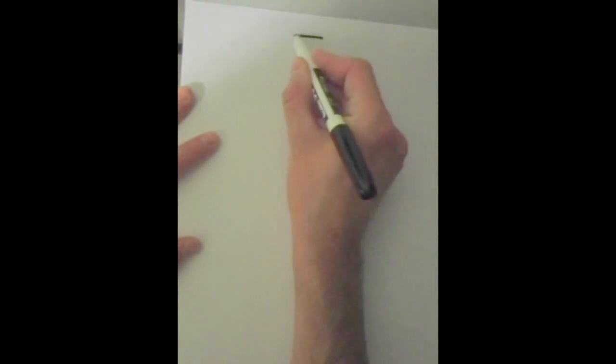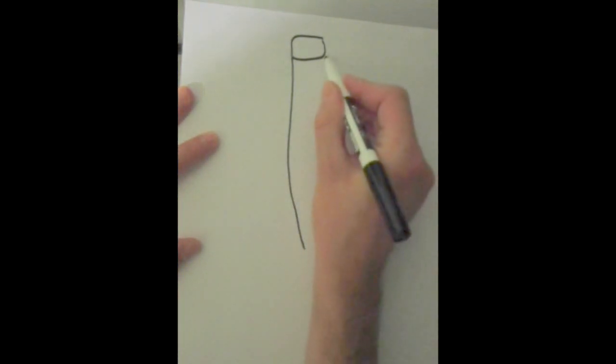All right, we're going to draw out some anterior Chapman points. So first we've got a manubrium, and we're going to make a big sternum off that manubrium.